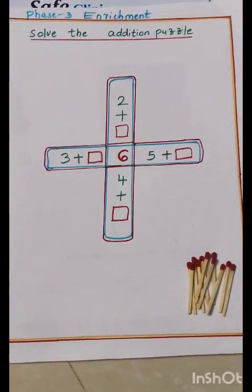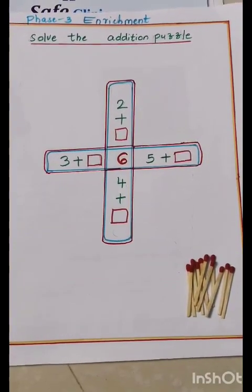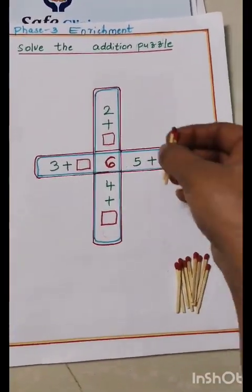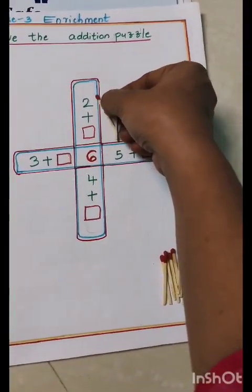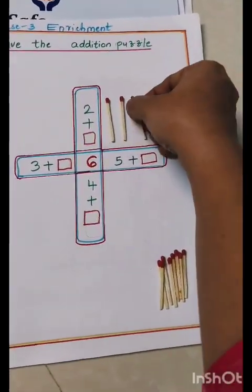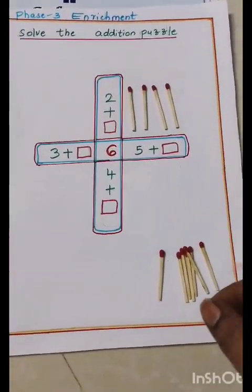Solve the addition puzzle with the help of matchsticks. To get total six, add matchsticks to two. Two plus four: three, four, five, six. So four matchsticks are needed to get total six. So the answer is four.